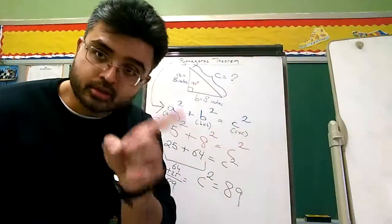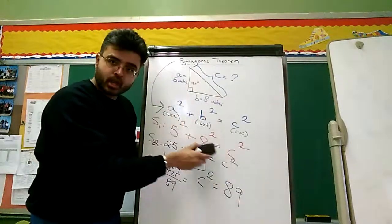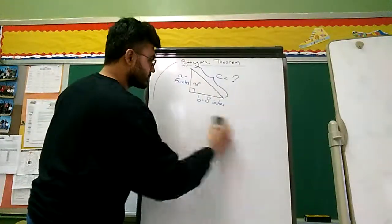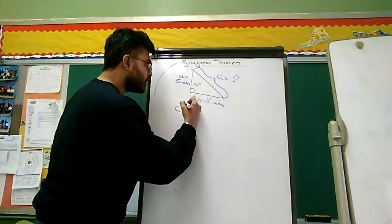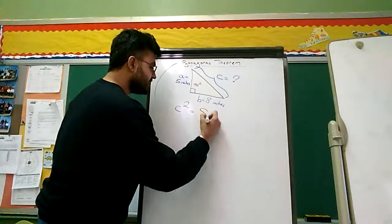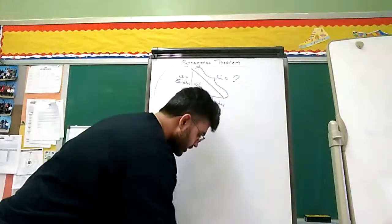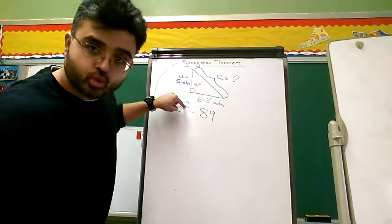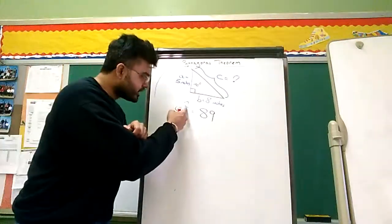Is that the answer? No. We're not done. I'm going to erase all of this and show you what to do next. So, C squared equals 89. Now, remember this, kids. You can never leave your answer as a square. Not allowed. You have to get rid of this square here.